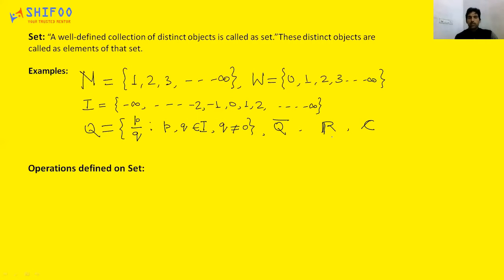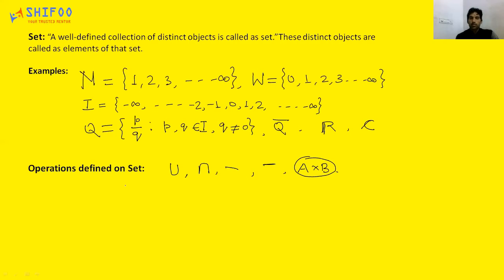Now I will briefly go through operations defined on a set. You might already know what union is, what intersection is, what set difference (A minus B) is, what complement of a set is, and what cross product (A cross B) is. We'll especially use cross product in our next study, so I'll explain what A cross B is.